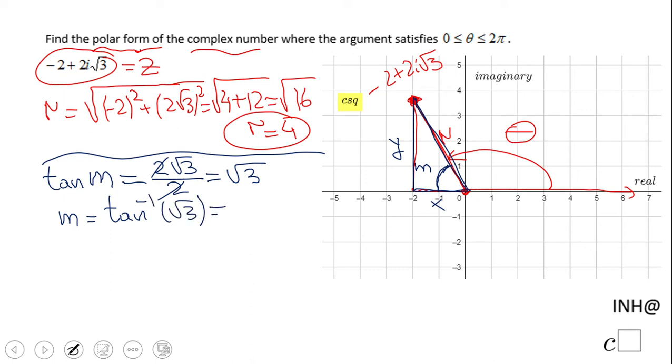When is the tangent square root of 3? That is 60 degrees. So this M is 60 degrees.